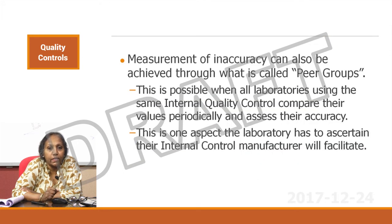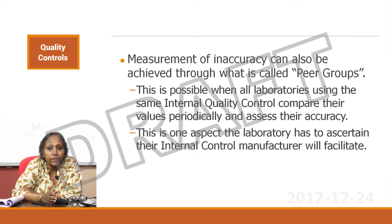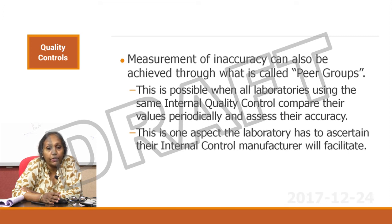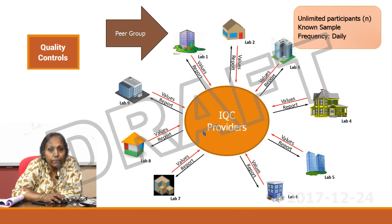Another method of finding inaccuracy using your internal controls is also possible. This system is called the peer group system. In the peer group system, your internal quality control provider enables a mechanism whereby all the users of the internal quality control pool in their results, and periodically their mean values are released, thereby indicating any shift in your accuracy. This is a very robust method because there are many participants and it is a daily process, giving a much more robust estimate of inaccuracies. Therefore, this is one aspect to keep in mind while ordering your internal quality control material — some providers offer this facility and should be given preference.